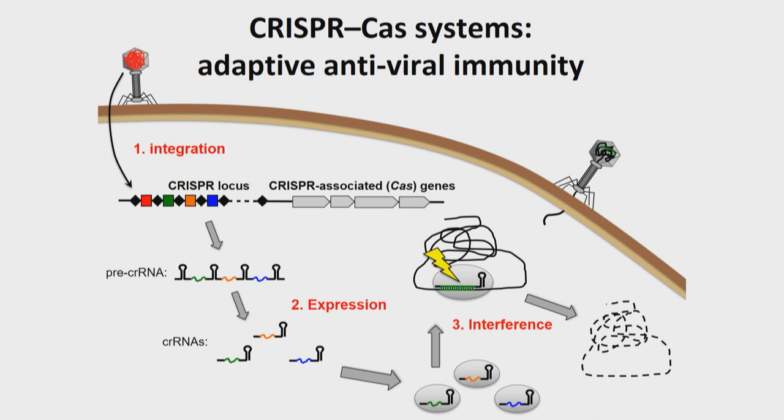Looking at this pathway, it's a fantastic way that bacteria can acquire immunity to their infectious agents, and then program proteins — these Cas proteins — to find and destroy those viral DNAs should they try to infect the cell in the future.